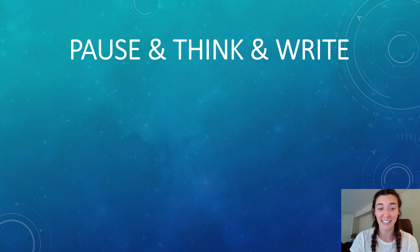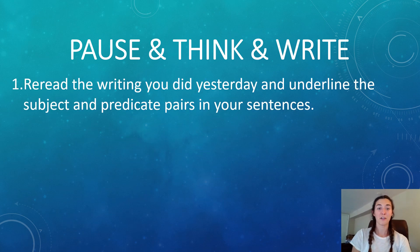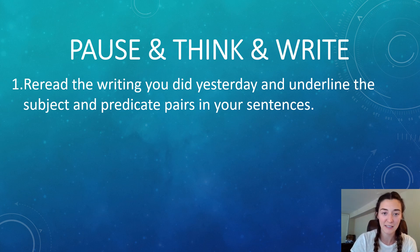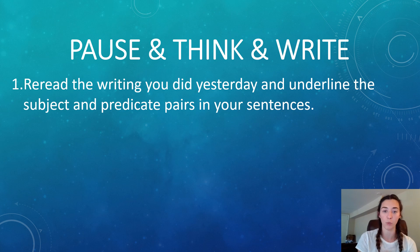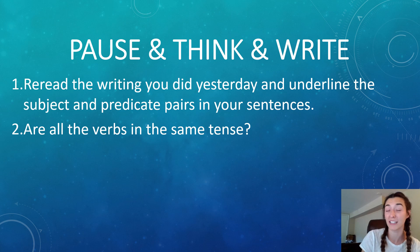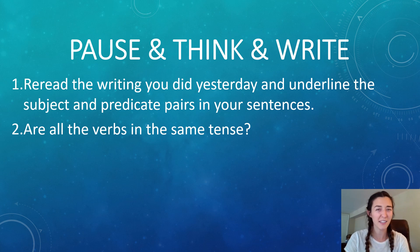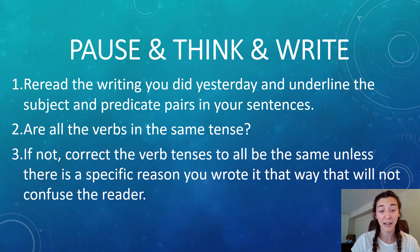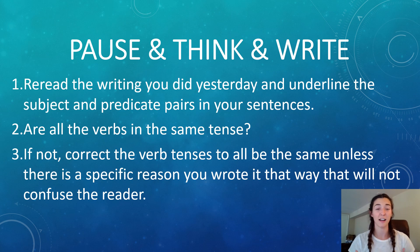Now it's time to pause, think, and write. Reread the writing you did yesterday and underline subject and predicate pairs in your sentences — think subject, the person; predicate, the verb: 'I went,' 'I saw,' 'we played.' After you do that, notice: are all the verbs in the same tense? Are they all in the past or all in the present? The ones that aren't — are they that way for a reason? If not, correct the verb tenses to be all the same unless there's a specific reason and it's not confusing to the reader.